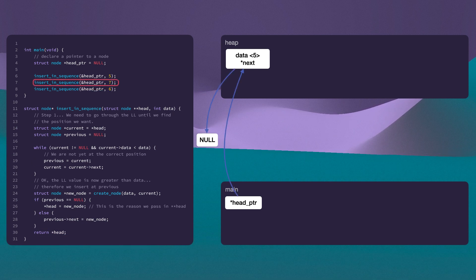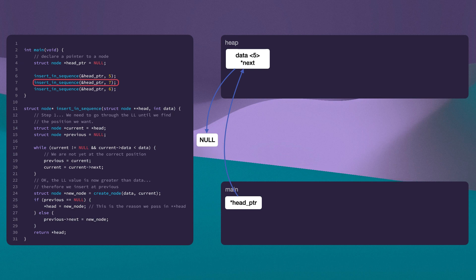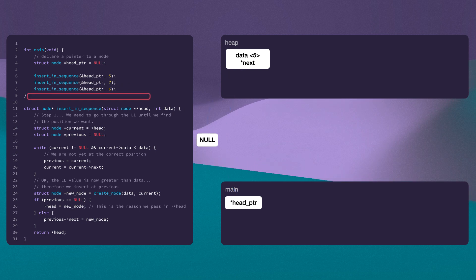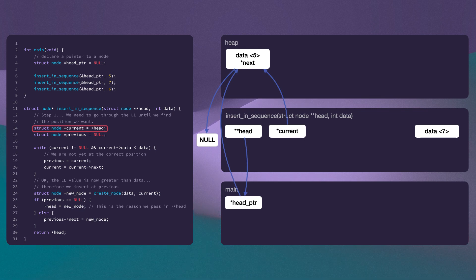Let's run this again with an element in our linked list this time, and we're passing in the value seven. So once again, we take the memory location of the head pointer and the value seven and pass that into insert-in-sequence. We initialize the values in the parameters. We then create our current variable — it's a pointer and we're taking the value of the pointer in head, which is going to point it to the value on the heap. We then make a new pointer called previous and it's pointing to null.